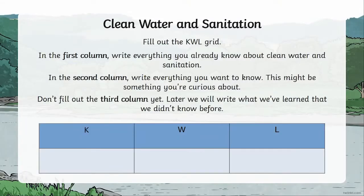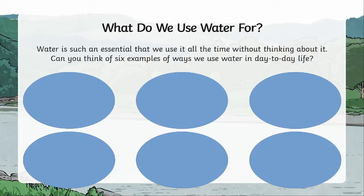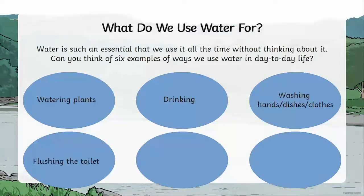All you need is a pen, paper, and internet access. First, learners explore a KWL grid and what World Water Day is. Then we learn about all the different ways to use water in our homes and how at times we can easily waste it. You can use water for watering plants, drinking, washing hands, dishes, and clothes, flushing